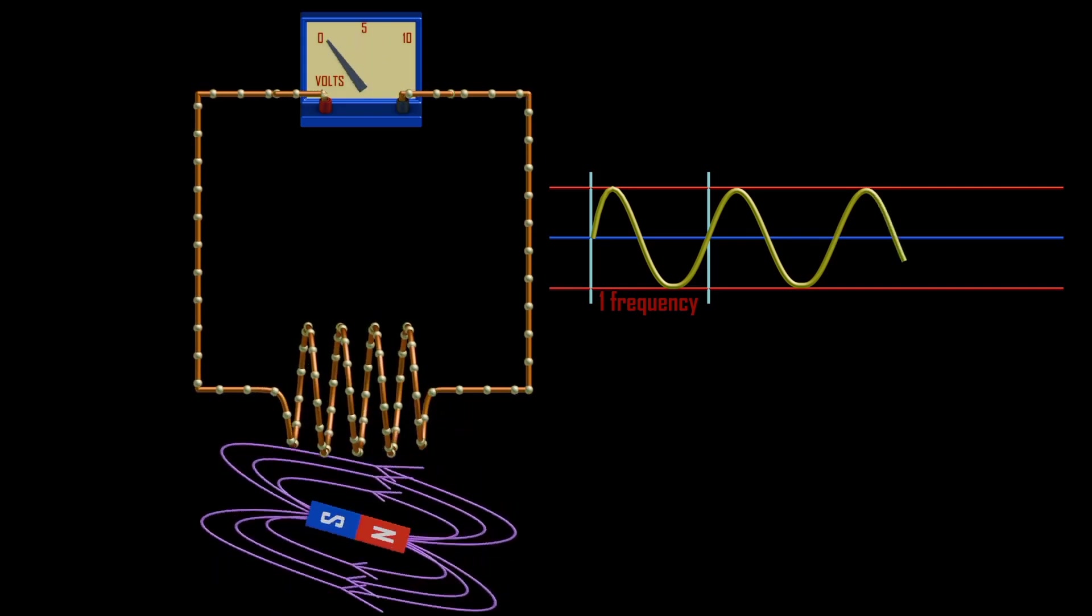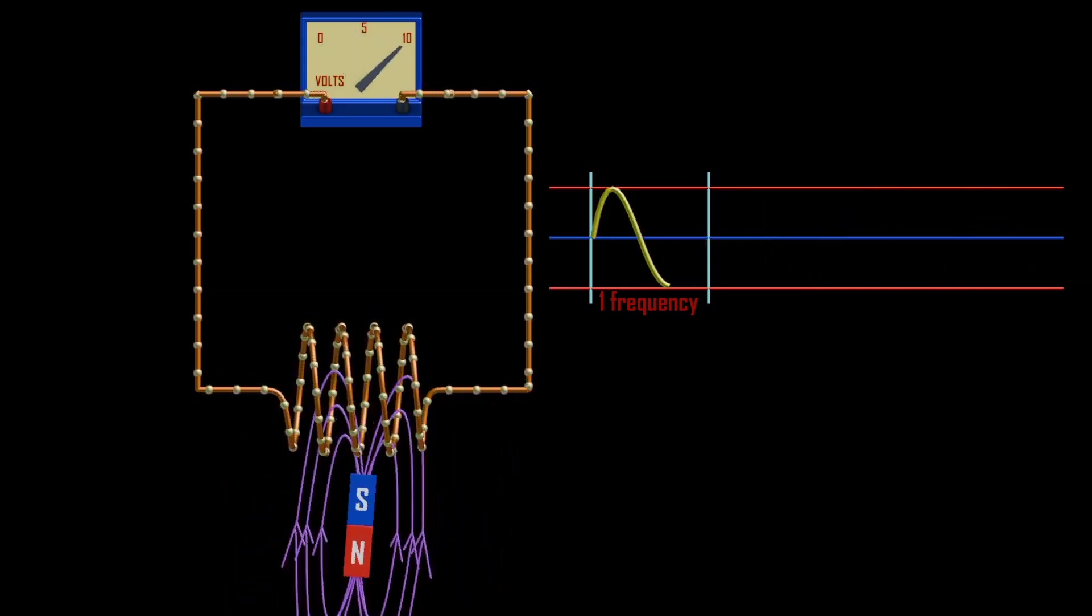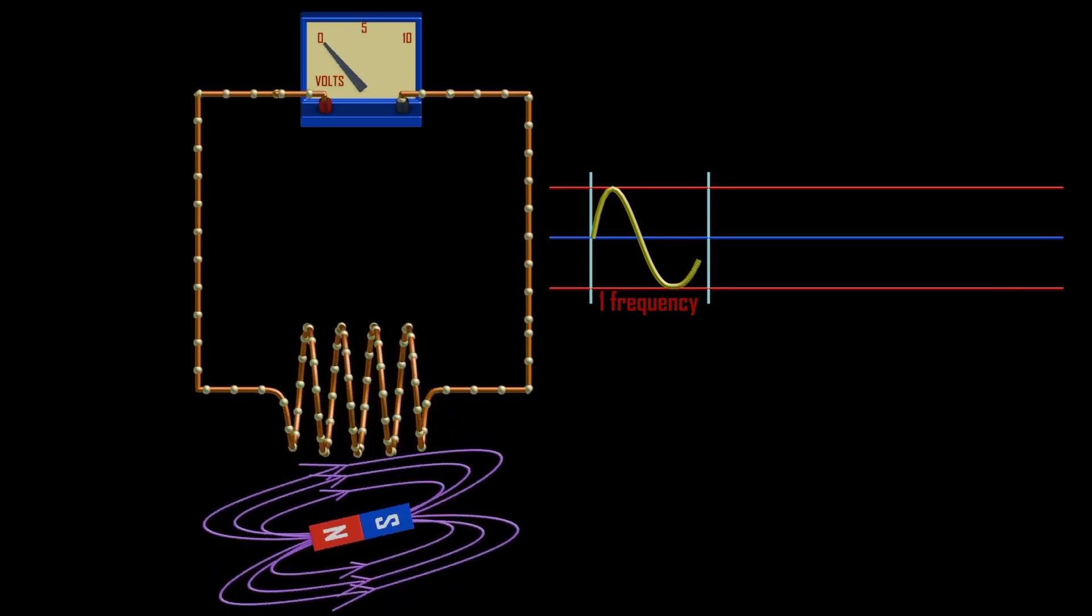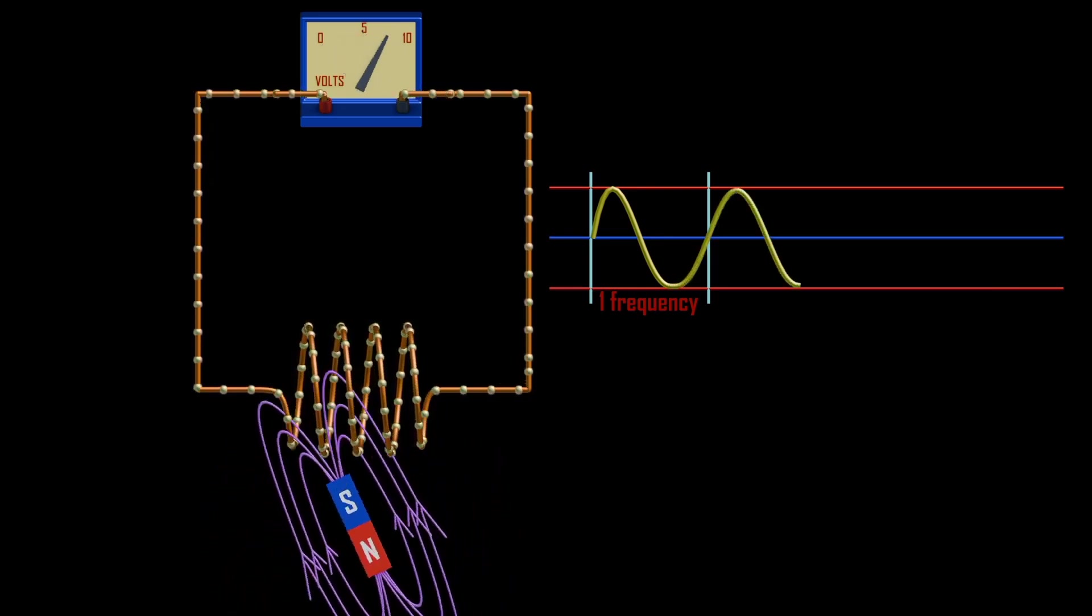Remember, the magnetic field strength of a magnet is stronger at the poles. So when the south pole approaches, the electrons will gradually increase their motion, from less to maximum, when the south pole is on the coil.